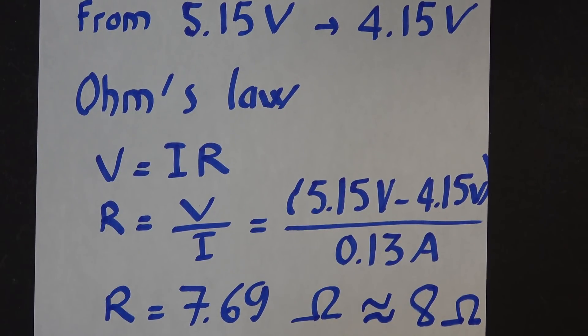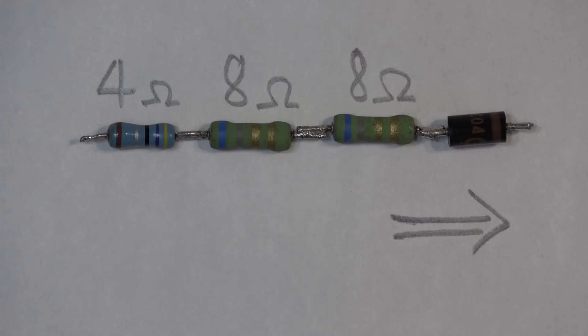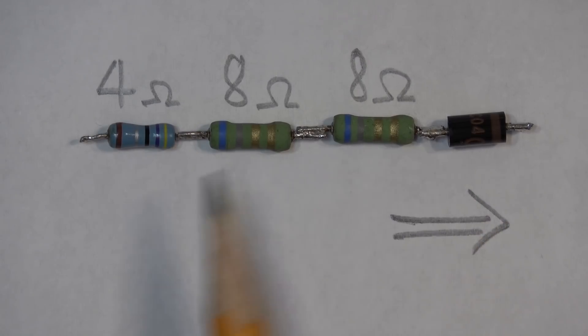I only need an 8 ohm resistor, but for demonstration purposes I have three resistors and one diode all connected in series: 4 ohm, 8 ohm, 8 ohm, and a diode. The resistors do not have any polarity, so you can connect them in any way you want, but the diode does have polarity.